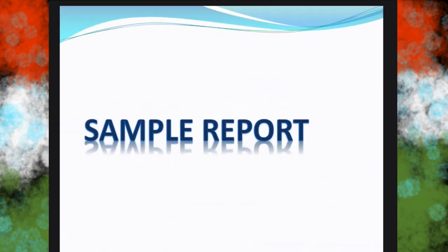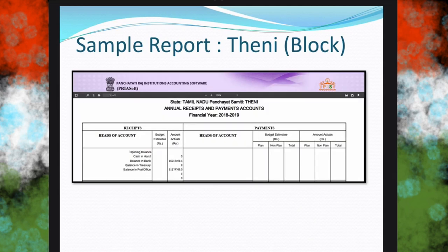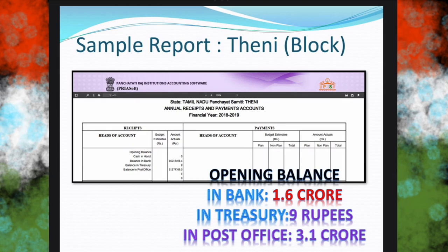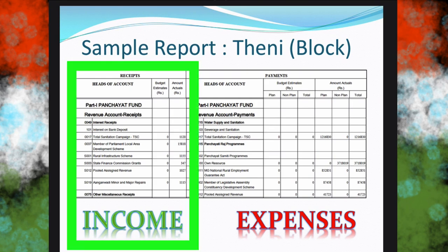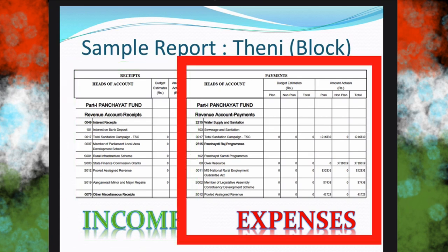Let us now move to a sample report to understand what information is inside. I took the sample report of my own tiny block where I live. Here you can see that at the beginning of the year 2018-19, the opening balance in the bank was 1.6 crore, in treasury they had 9 rupees, and in the post office they had 3.1 crore as fund. Now we move to the important section — the income and expenses, which they mention as receipts and payments.